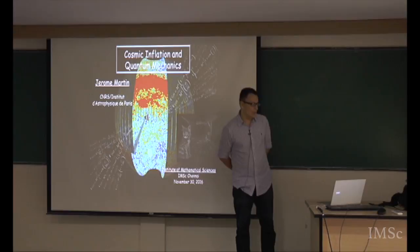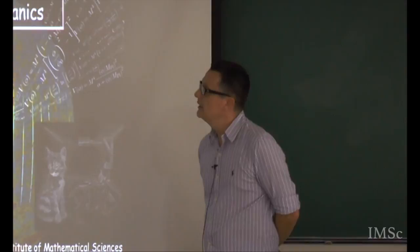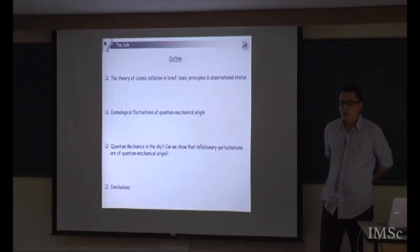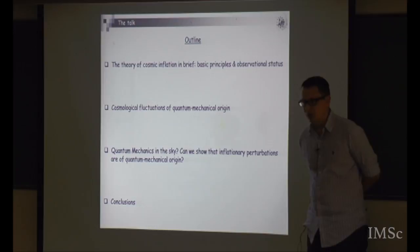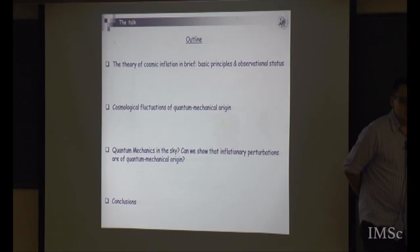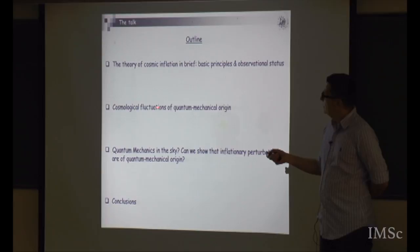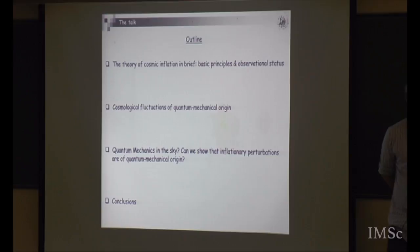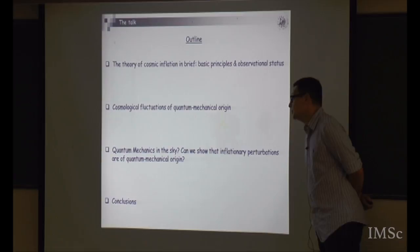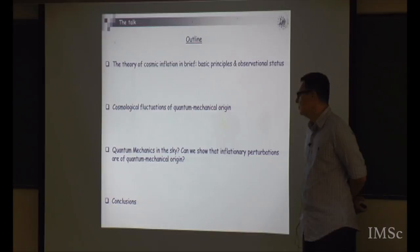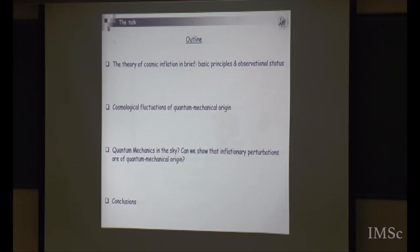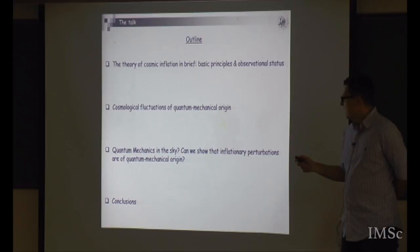What I will try to do in this talk is to use cosmic inflation in order to learn something, possibly, about quantum mechanics. I have organized the talk into three parts. The first will be a crash course on cosmic inflation — inflation in brief — where I'll remind you of the basic principles and observational status. Then I'll focus on the theory of cosmological fluctuations of quantum origin. In the third part, I'll discuss whether we can see quantum mechanical signatures in the sky. Finally, I'll present some recap and conclusions.